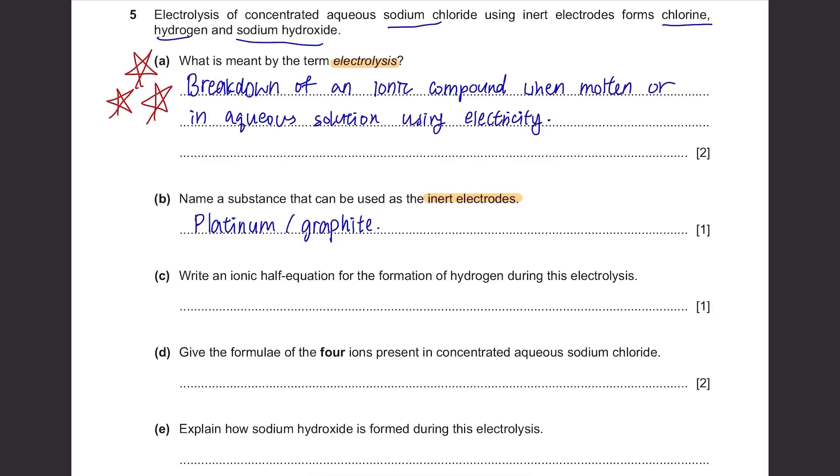Part C: Write an ionic half equation for the formation of hydrogen during this electrolysis. The half equation of hydrogen is basically fixed. In the product side, you'll have hydrogen gas produced, while the ion will be hydrogen ion, H⁺. But you know that there are two hydrogen atoms here, so you should put two in front of H⁺ to balance it. And since the charge here is plus two, you need two electrons to make it minus two.